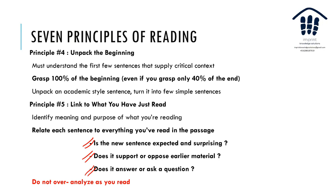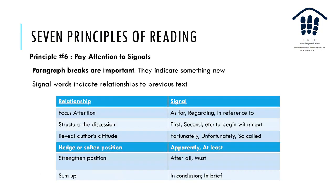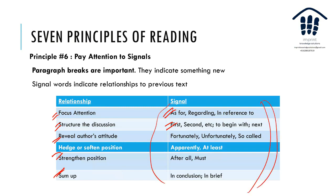So engage with the passage, look for the simple story, link to what you know, unpack the beginning — check whether things are going in sequence or are opposite to each other. Do not over-analyze as you read; you need to answer questions, not give a speech. Fifth principle: pay attention to signals. Paragraph breaks and signal words like 'first,' 'second,' 'fortunately,' 'unfortunately,' 'apparently,' 'after all,' 'in conclusion' reveal the author's attitude and structure the discussion.